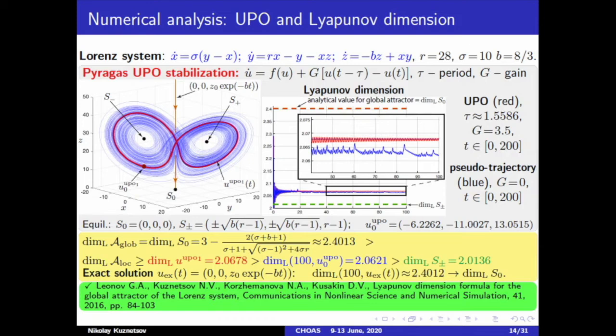Thus, there are demonstrated finite-time shadowability and difficulties of applying Ergodic theory for the Lorenz system. It is interesting that while in this case we don't have uniform behavior of Lyapunov exponents and Lyapunov dimension for all initial points on the attractor, we can still apply analytical methods developed by Gennady Leonov to obtain the exact upper bound of the Lyapunov dimension for all points in the phase space.